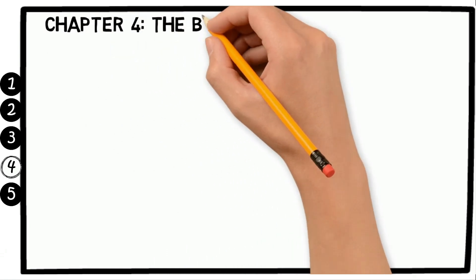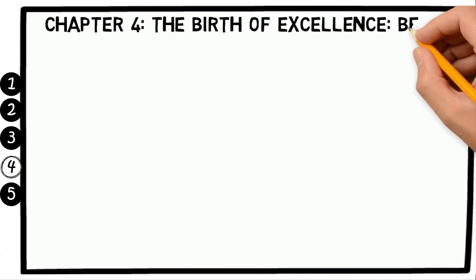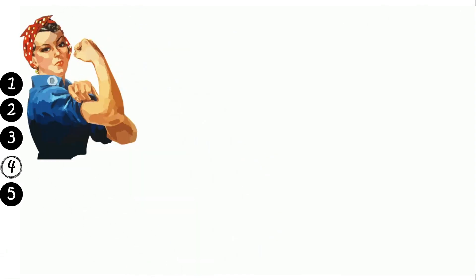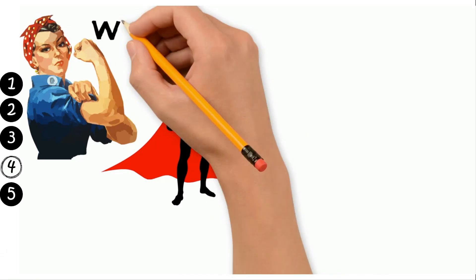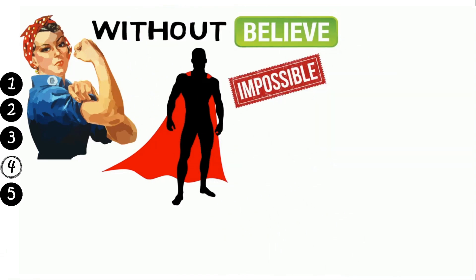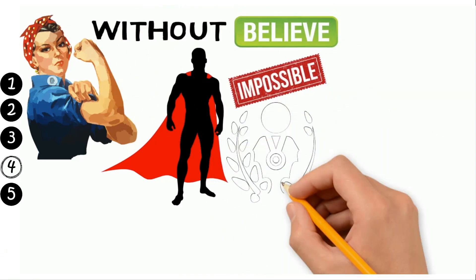Chapter 4: The Birth of Excellence - Belief. Robbins discusses the importance of having faith in oneself and one's abilities. He argues that without belief, it's impossible to achieve anything of significance.